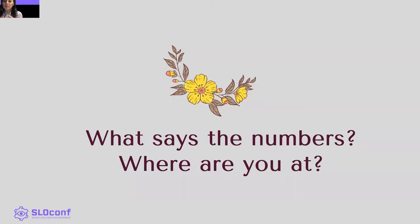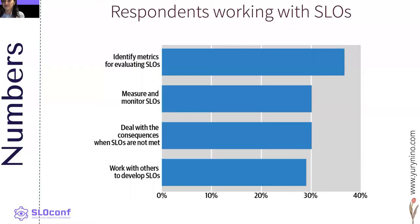If we are going to talk about maturity, it is important to know how the numbers in the industry are and where you are at. A survey applied by the authors of the book SLO Adoption and Usage Inside Reliability Engineering, among more than 500 industry professionals, showed that 54% of respondents don't have SLOs. Interestingly, 35% said they use a different metric to track user happiness. Most respondents are involved in identifying metrics for evaluating SLOs.